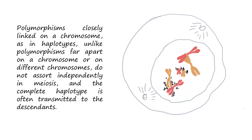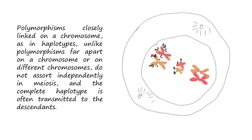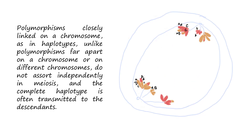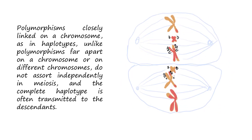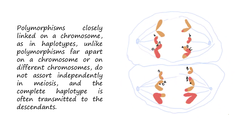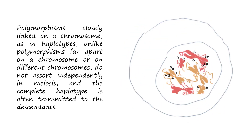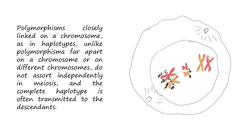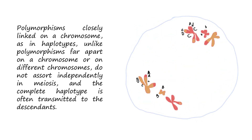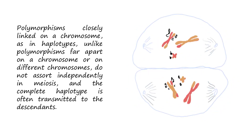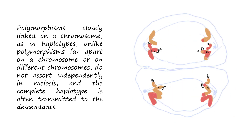Polymorphisms closely linked on a chromosome, as in haplotypes, unlike polymorphisms far apart on a chromosome or on different chromosomes, do not assort independently in meiosis, and a haplotype is often transmitted to the descendants.